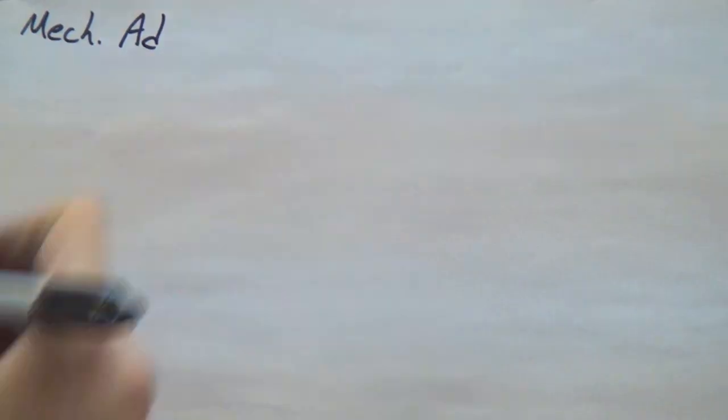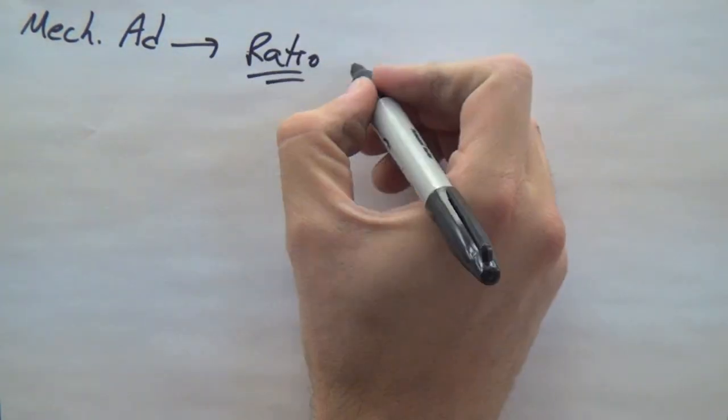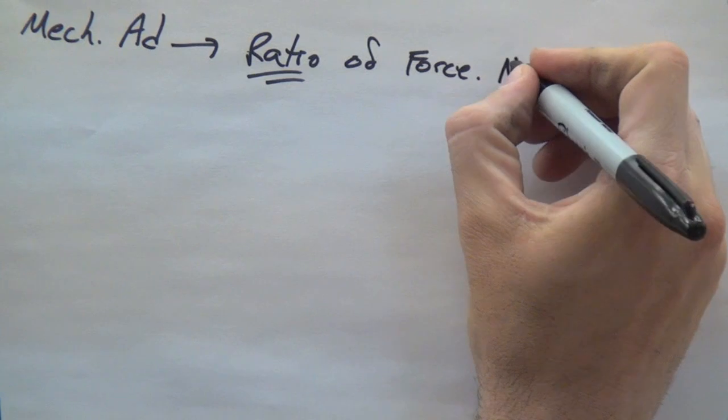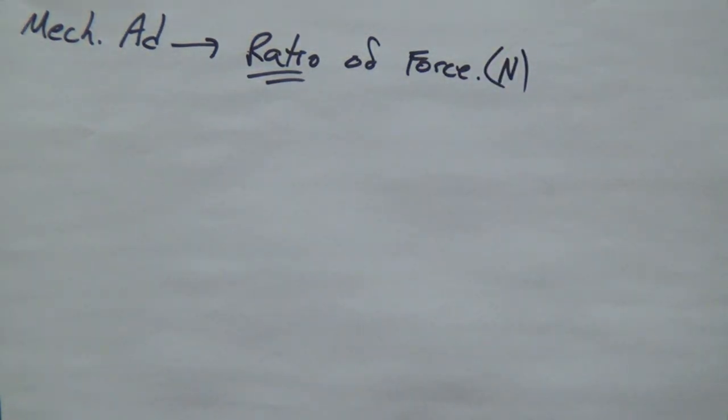Welcome. Mechanical advantage, welcome. So, let's say we got a lever, this little machine. The purpose of the machine is to make our lives easier. That gives us a mechanical advantage, or a ratio of force.